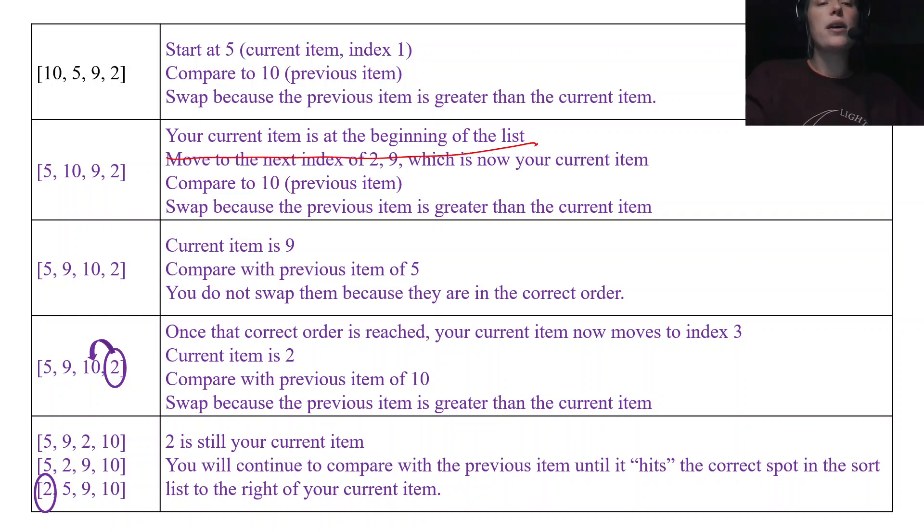And then I'm done because it reached the beginning of the list, or I would stop once the correct order has been reached, once that element is no longer less than the previous element. You can think of it, it keeps going until it hits the correct spot. And now you're done because your index is done. That was the last index, so the loop stops.